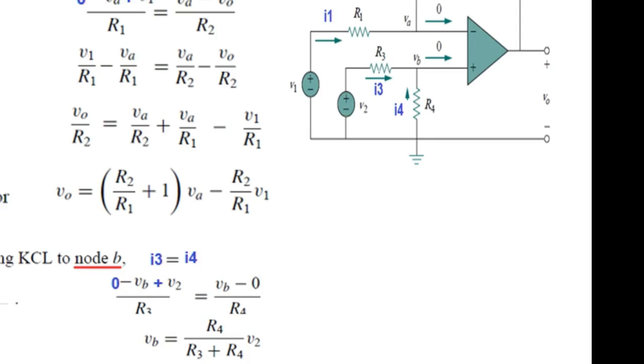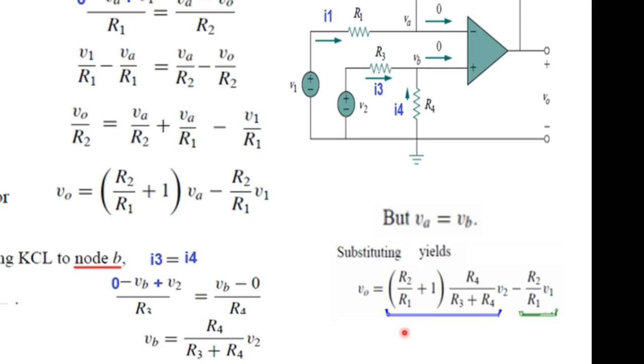Now, since VA and VB are equal, therefore, in this case VA we can replace by this value VB. And so, our new equation will become, this is the output equation in terms of the two inputs, now V1 and V2.